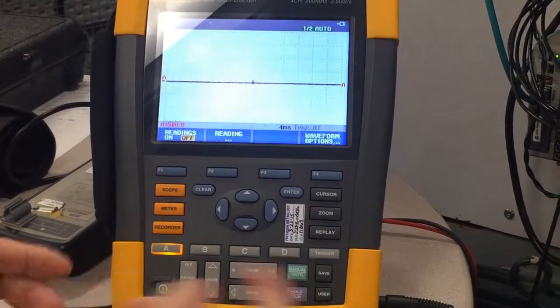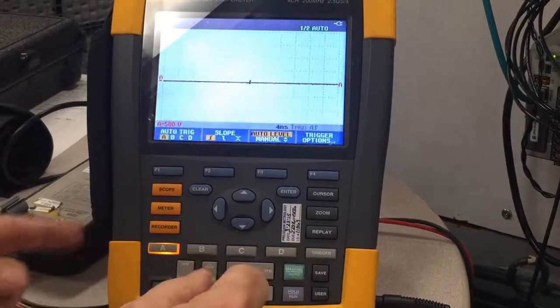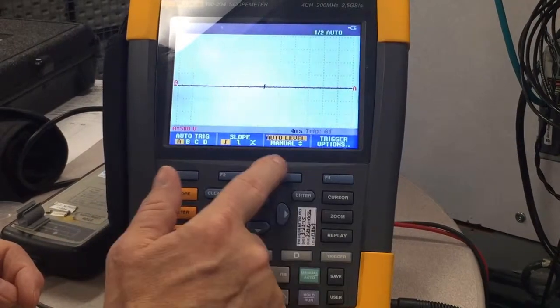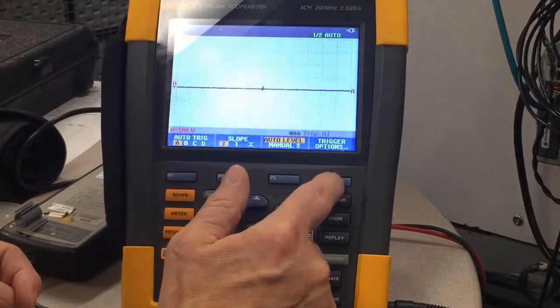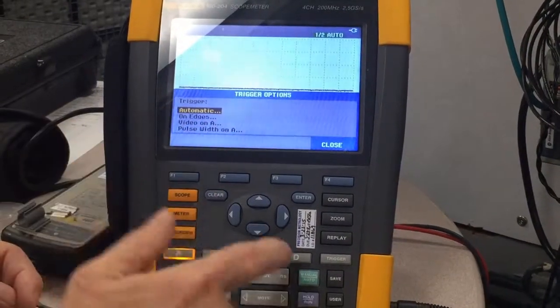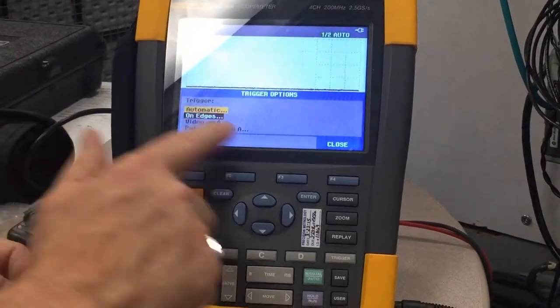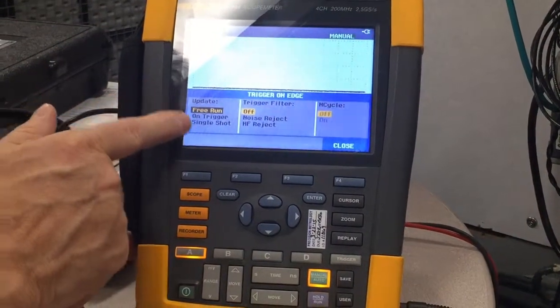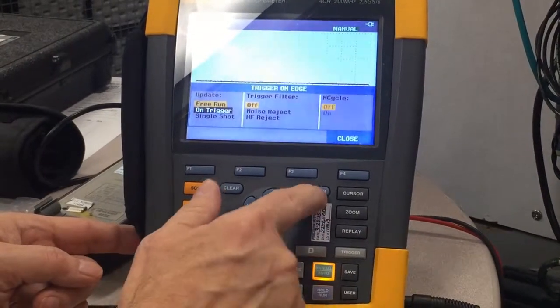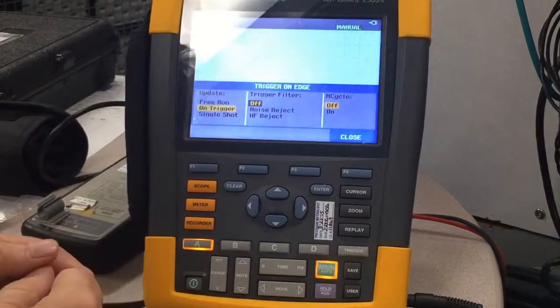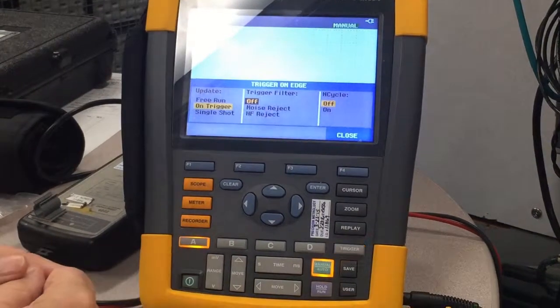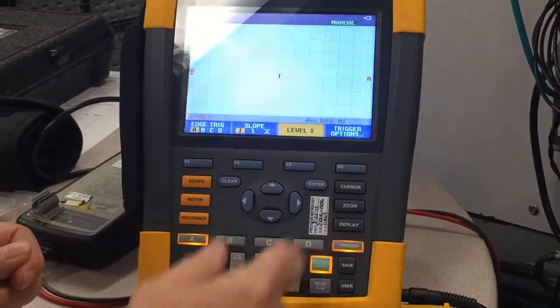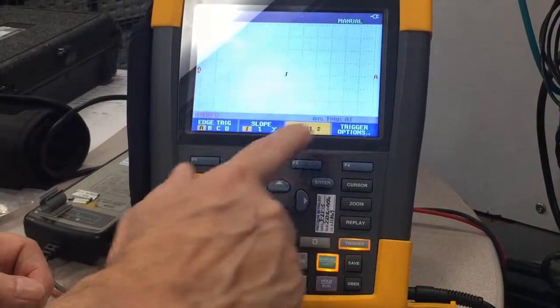The next thing we're going to do is set up our trigger. So, you press the Trigger button. And we're going to make sure we trigger on A. Make sure the slope is positive. And then we're going to look at trigger options. What we want to do is only trigger on edges. So, we scroll down to on edges. Press Enter. And it gives us a new menu. And we want to update only on the trigger. So, we down and then press Enter. So, now we have our trigger options all set. And we're ready to start the drive to take some measurements. We close this out. Close this out. And we'll leave it at the trigger menu right here.